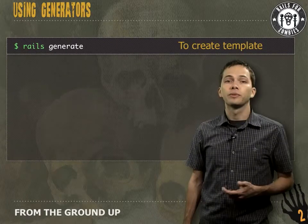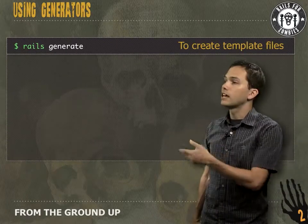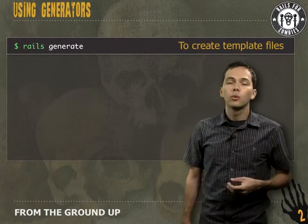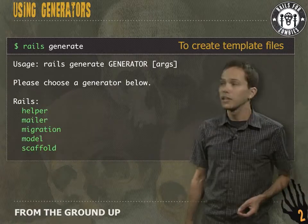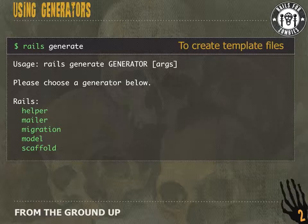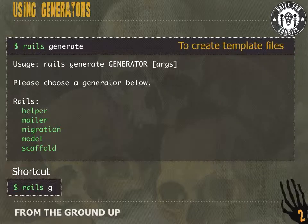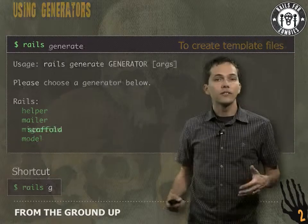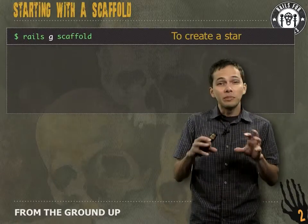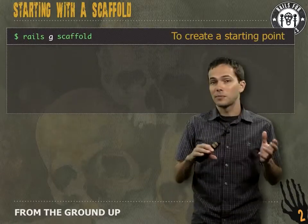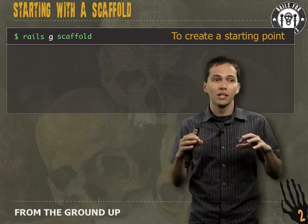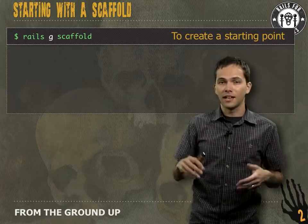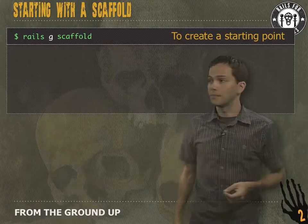Next, let's take a closer look at the Rails generate command. If we run it without any options, we're given a list of generators which we can use to generate source for our Rails app. The shortcut for generate is `rails g`, and let's use that to generate a scaffold. A scaffold is the basic building block for most Rails apps — we specify a resource and it builds us views to list, edit, create, and delete items.